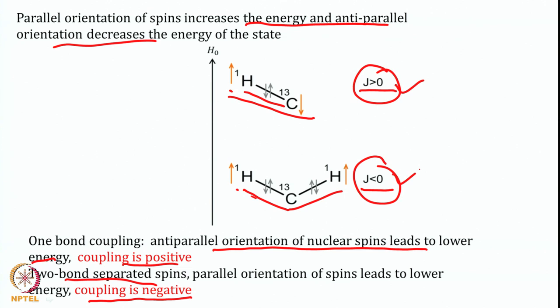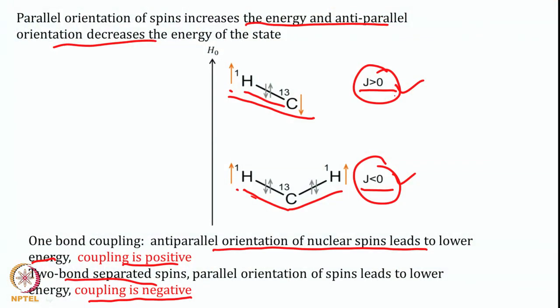One thing to remember: J coupling is field independent. Chemical shift was field dependent, and when we express it in PPM value it becomes field independent. J coupling is invariably field independent — positive or negative sign depends upon orientation but not upon which field we are recording at. It is a constant value.